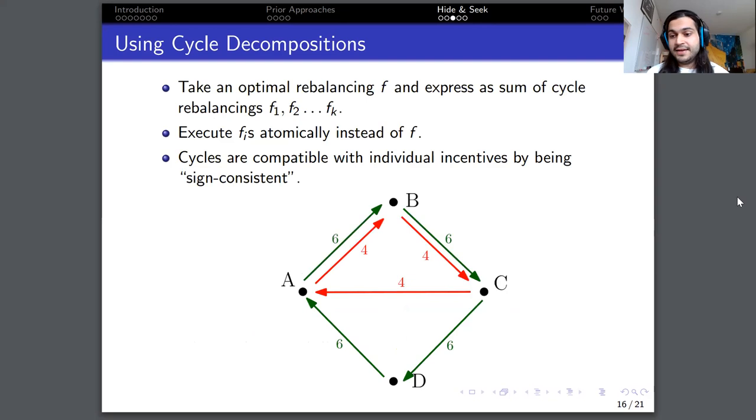Suppose that the delegates have computed the optimal rebalancing, which is f, via multi-party computation. We don't ask f to be executed atomically, but rather first we decompose this f into a bunch of cycles. Let's say f1 up to fk, which are cyclical rebalancings, but that if you were to execute all of these, it would be equivalent to executing f. And then we ask the cycles to be executed atomically. Moreover, the cycle decomposition we have, we require the cycles to be so-called sign consistent cycles.